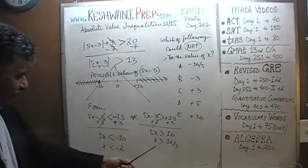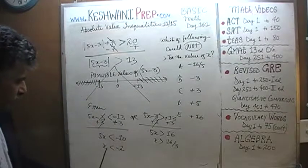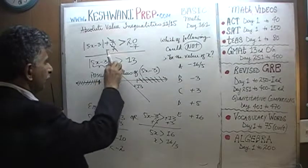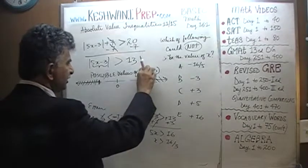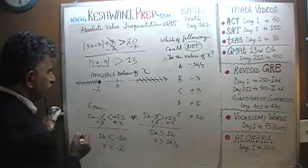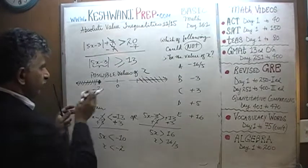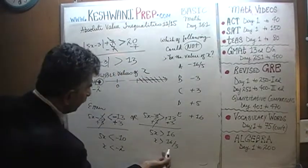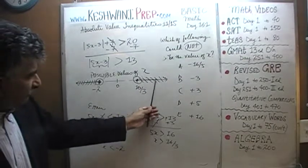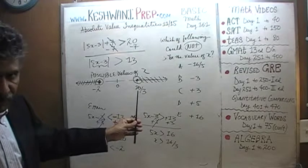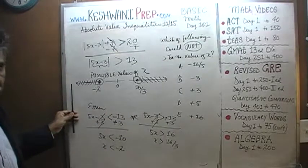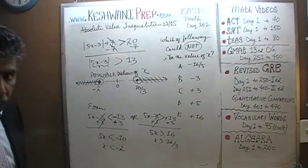Let's show these values of x on the number line. The two regions: x is less than negative 2 or more than 16 thirds. This is negative 2 — and since there's no equal sign, we use an open circle. And this is 16 thirds. So the solution is x less than negative 2, open circle, or x greater than 16 thirds, open circle.